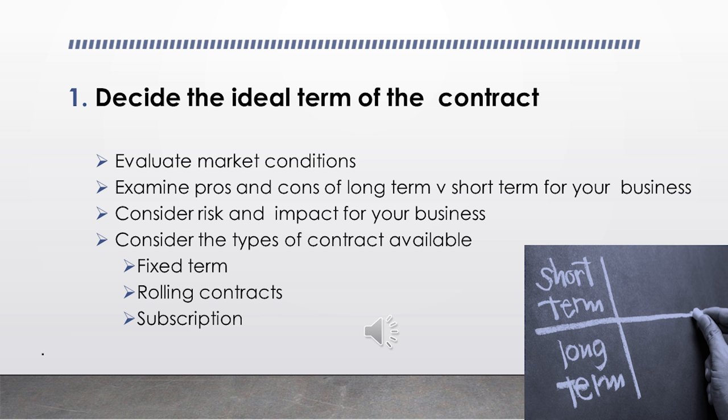When you sit down to consider the needs of your business for each commercial contract, the first thing to consider is the term of the contract. You're likely to have different needs for different types of contracts — sometimes the priority is stability and knowing the pricing, and sometimes you want more short-term flexibility to take advantage of a fast-moving marketplace. A contract can be as short or as long as the parties want, and there are pros and cons of both.